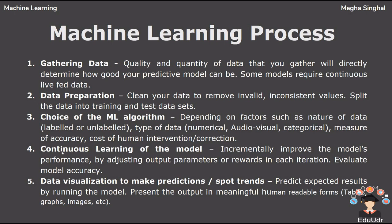The next step is to choose the correct machine learning algorithm in order to fit your data. Depending on factors such as the nature of data — whether it's labeled or unlabeled — and the type of data — whether it's numerical or in audio form — we choose the correct machine learning algorithm. The next step is to incrementally improve the model's performance by adjusting the output parameters or rewards in each iteration. The last step is to visualize the data and then make a correct decision.